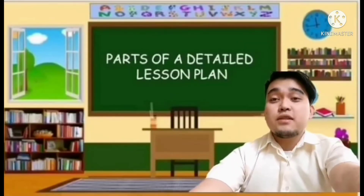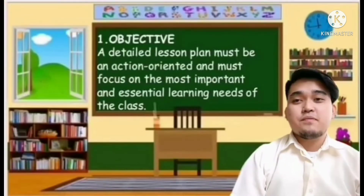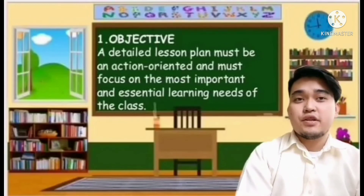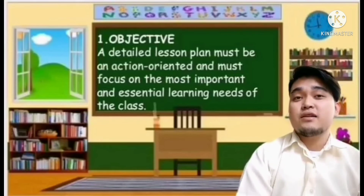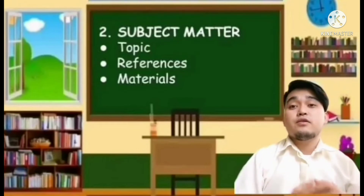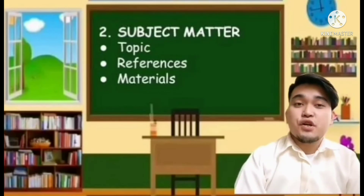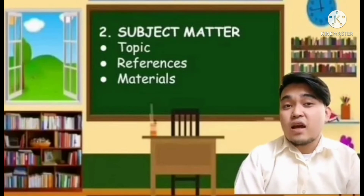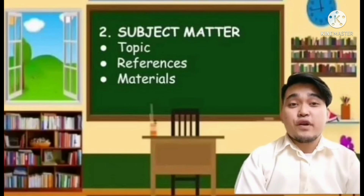Here are the parts of the detailed lesson plan: the objectives, subject matter, procedure, and the lesson proper. For the objectives, a detailed lesson plan must be action-oriented and must focus on the most important and essential learning needs of the class. They should be measurable so teachers can track students' progress and ensure that new concepts are understood before moving on, and achievable considering the time available. For the subject matter, you must consider the topic, the reference, and the materials. The DLP's subject matter contains the specific knowledge to be shared — including topic, reference, and materials — for the particular lesson to be tackled. References allow you to acknowledge the contributions of other writers and researchers in your work. And lastly, the materials used in the lesson.